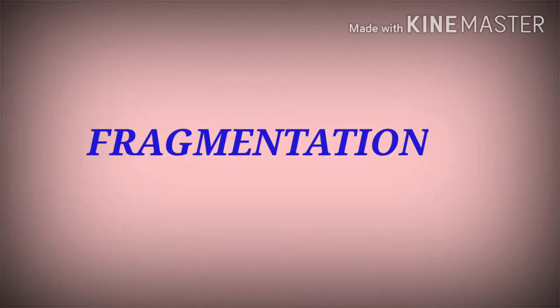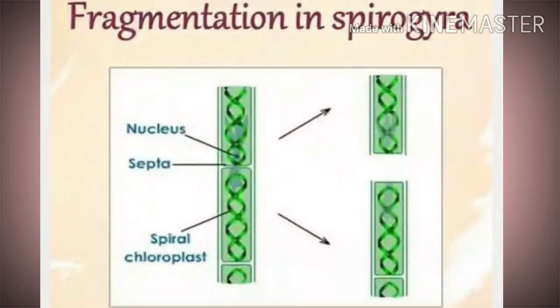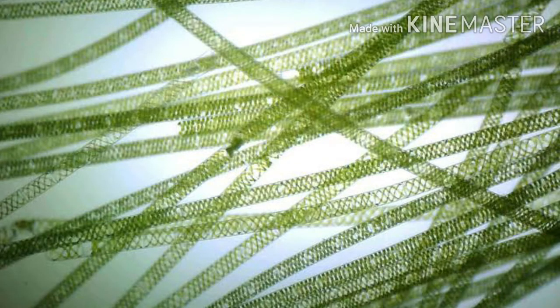Coming to fragmentation, some organisms can grow from a single piece of the parent organism. The fragment can be from any part of the body. Examples include algae, fungi, and many land plants.